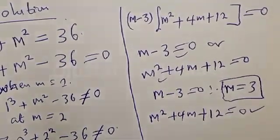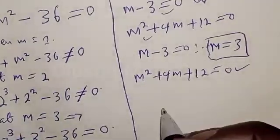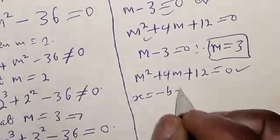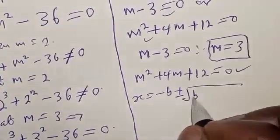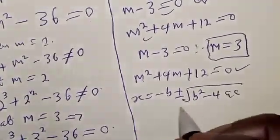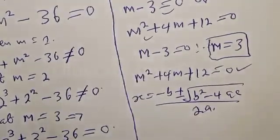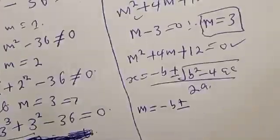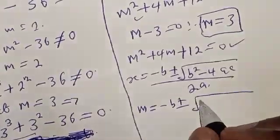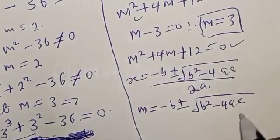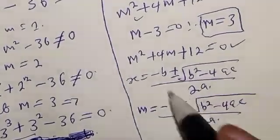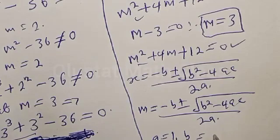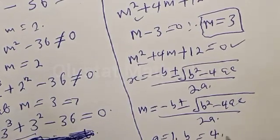This is a quadratic equation and we solve using the quadratic general formula: m is equal to minus B plus or minus square root of B² minus 4AC, all over 2A. From the equation m² plus 4m plus 12 equal to 0, A is equal to 1, B is equal to 4, and C is equal to 12.